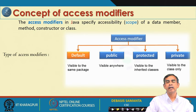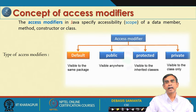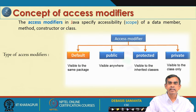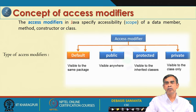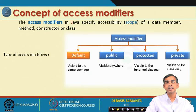If it is protected, that member cannot be accessed by all classes — it can only be accessed by any method belonging to any inherited subclass. If it is private, that member cannot be accessed by any method other than the methods in that class itself. If no specifier is mentioned explicitly, it is called the default access specifier. Access modifiers specify the scope a member has — whether within the class, within the directory, or anywhere.